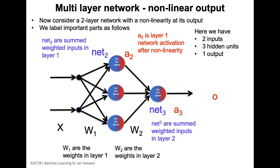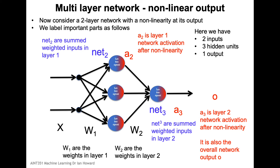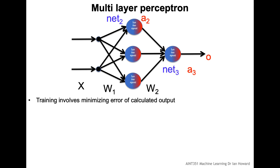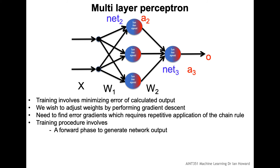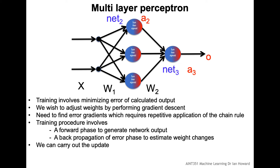We then calculate the linear combination from the second layer, which we call net3, and pass it through the sigmoid nonlinearity generating activation a3, which is also the overall output of the network. Training, just like gradient descent for regression and single-layer networks, involves applying the data, calculating error gradients with respect to the weights, and updating the weights — first doing a forward phase, then back-propagating the error.